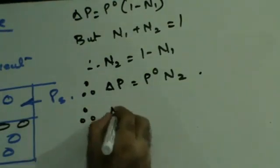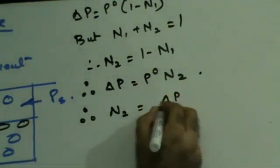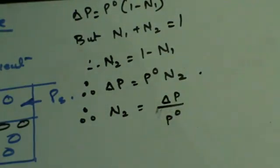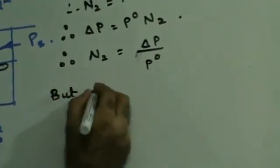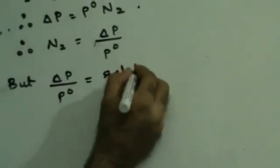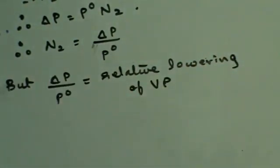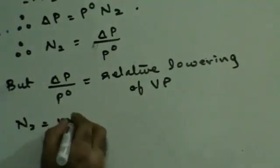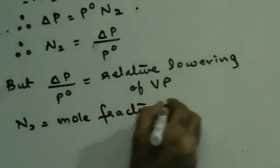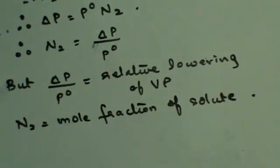Thus, I could say that N2 equals delta P upon P0. Now, delta P upon P0 is nothing but the relative lowering of vapor pressure. Thus, we have proved that N2 — the mole fraction of the solute — equals the relative lowering of vapor pressure. We have said that the relative lowering of vapor pressure is equal to the mole fraction of the solute.